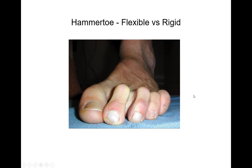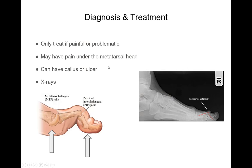The first thing you have to do is determine if it's flexible or rigid, because if it becomes painful, it usually is more of a rigid deformity and can become problematic. To diagnose this, we would get an x-ray, evaluate your foot, and see if you have pain only on the bump, or pain underneath the metatarsal head as well. Then we check whether you have a callus on the tip or top of the toe, or even a sore or ulcer. One important thing to look at on x-ray is something called retrograde force.